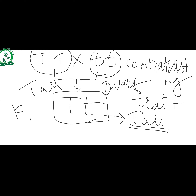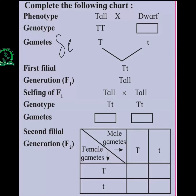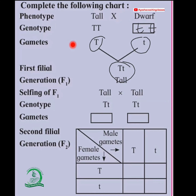Now we will study the law of segregation. We have taken the pure dwarf parent small d small d and pure tall parent capital D capital D. Gametes formed are capital D and small d respectively. After fusion, the F1 hybrid capital D small d is obtained, which has phenotype tall. Now we do selfing of the F1 generation — we take two F1 generation plants, both capital D small d, which have tall appearance.